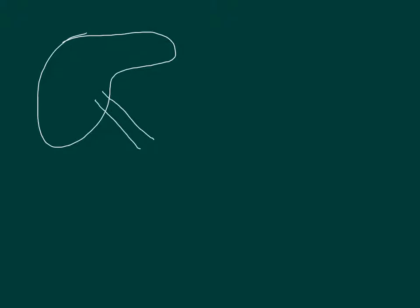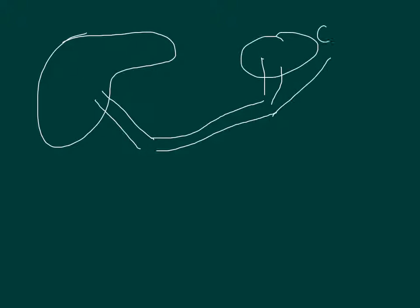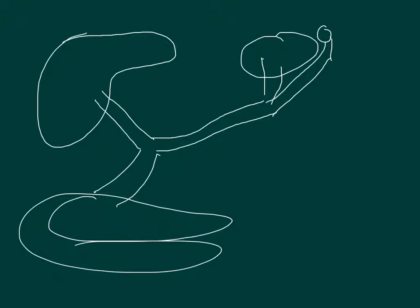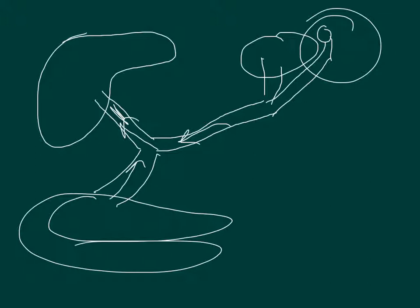Anytime the liver gets enlarged, it kind of closes down the portal vein, causing backup. The portal vein branches to veins from the stomach, the spleen, and the mesenteries of the intestines, all flowing into the liver. When the liver gets inflamed, it gives backup to this vein and your spleen starts to swell up — splenomegaly.